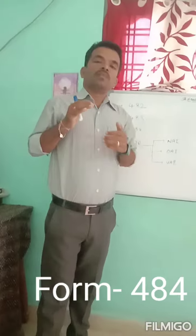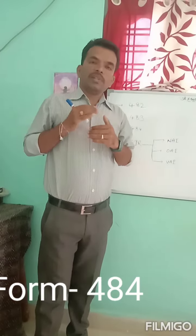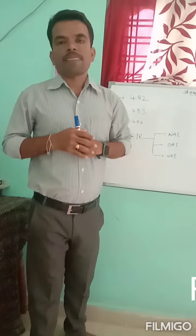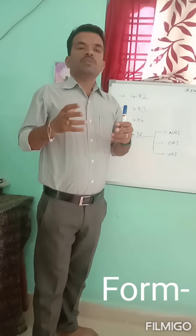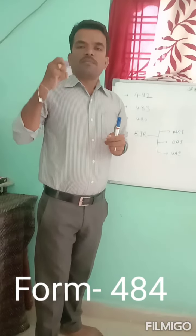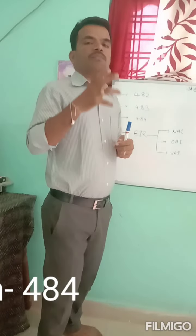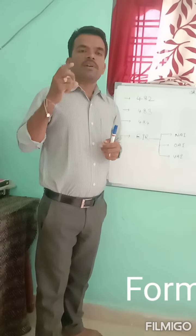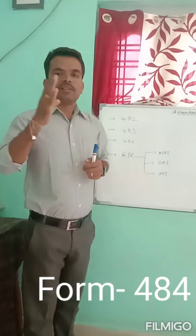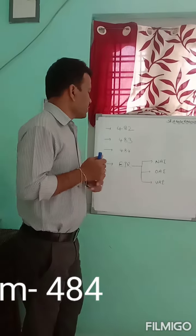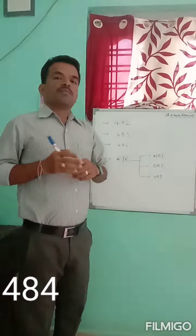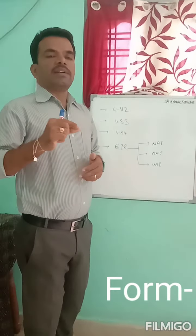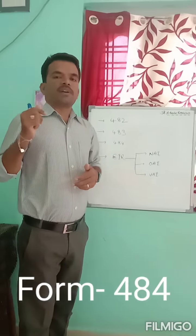Form 484 is issued during the FDA inspection when the inspectors want some samples. They will give one form specifying how they have to take the samples, and they will enter the sample details and batch number details in that format. That format is called Form 484. In the 484 form, they will enter all details of that particular product, batch number, and everything.